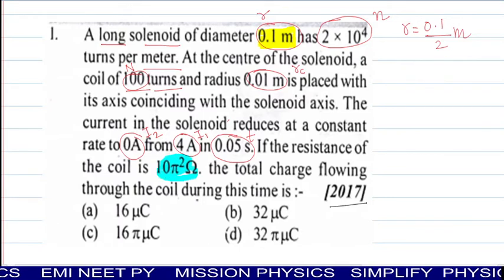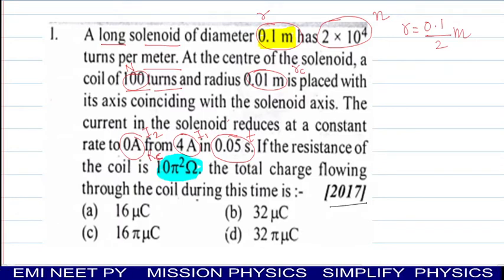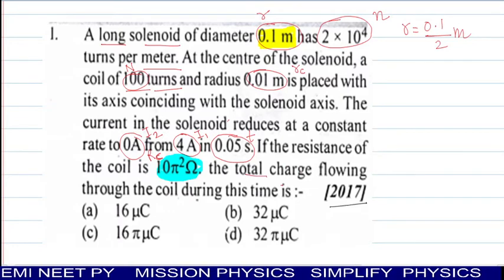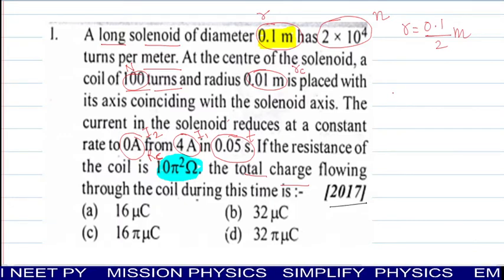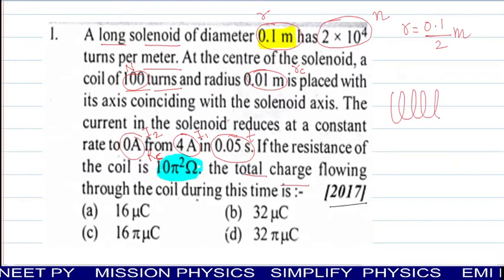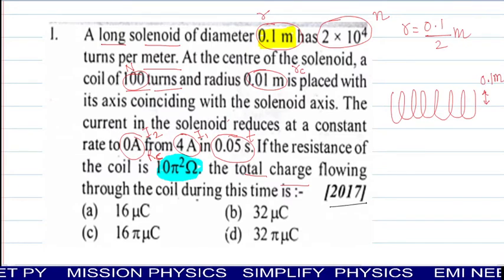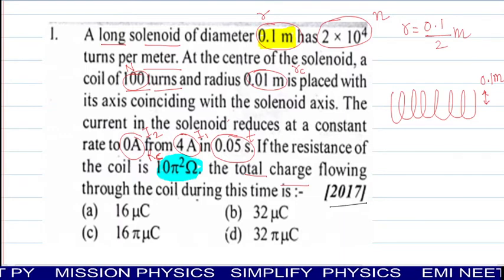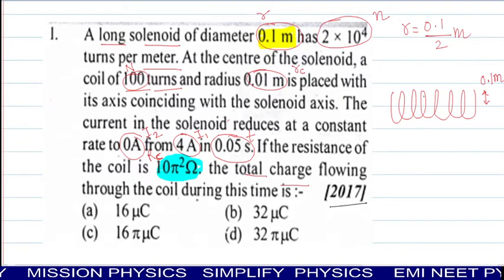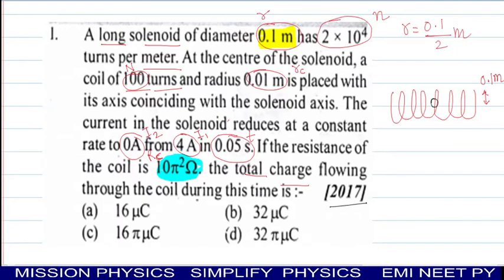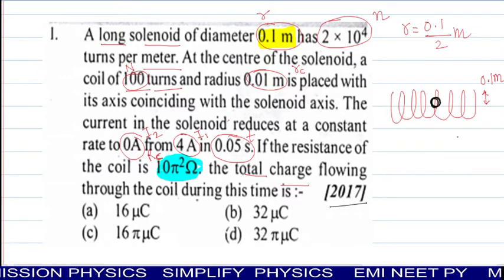If the resistance of the coil is 10 pi square ohm, this is r c. We have to find the total charge flowing through the coil during this time. Now first, make a diagram. This is a long solenoid with radius 0.1 meter. At center there is a coil with 100 turns, but its radius is one-tenth. So it's a very small coil.